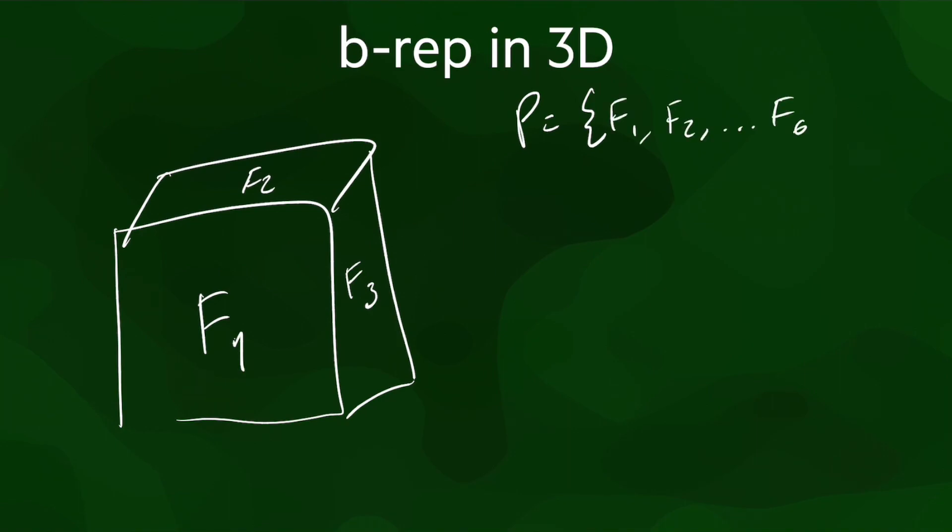Moving on to 3D, instead of representing a polyhedron explicitly, we can represent it implicitly through the 2D surface that bounds it, usually by modeling every polygon in its surface independently.